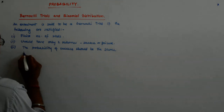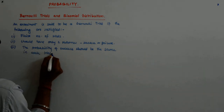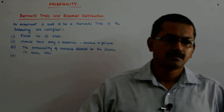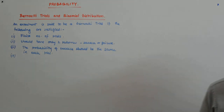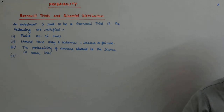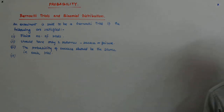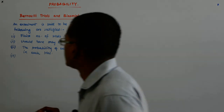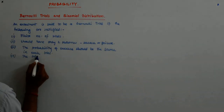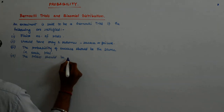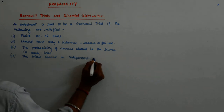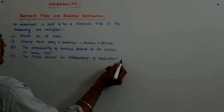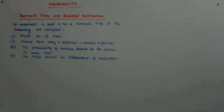Failure probability will also be the same in each trial, and the trials should be independent of each other. For example, you pick up a dice and throw it — it is absolutely independent of what you got earlier. Getting an even is absolutely independent of whatever you got before. The trials should be independent of each other.